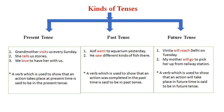Observe the examples given below. In present tense, the words 'visits,' 'tells,' and 'love' show the action of present time. A verb which is used to show that an action takes place at present time is said to be in present tense. In the middle box, 'went' and 'saw' show the action of past time. A verb which is used to show that an action was completed in the past time is said to be in past tense.